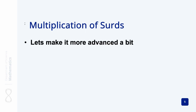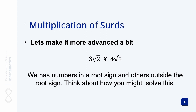Let's make it a little bit more advanced. In this problem we have three by the root of two, multiplied by four by the root of five. In this case we have numbers inside a root sign and other numbers that are outside of the root sign.